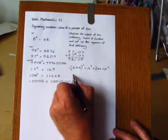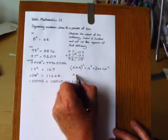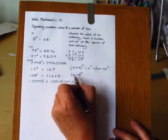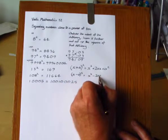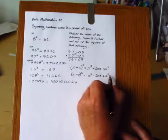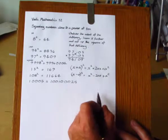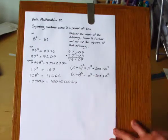And similarly, when the numbers are below the base, we would have x squared minus 2ax plus a squared. And that is the algebraic explanation for this method.